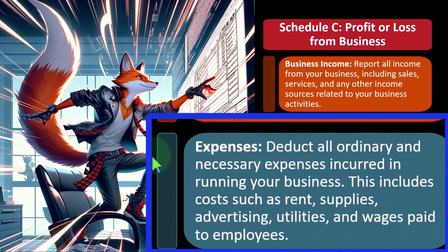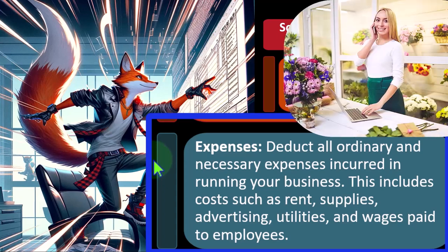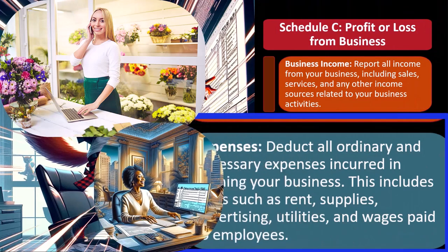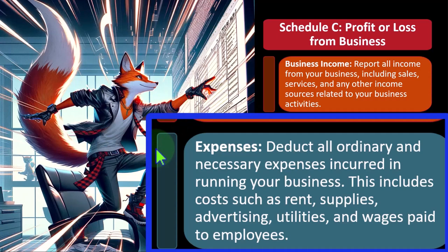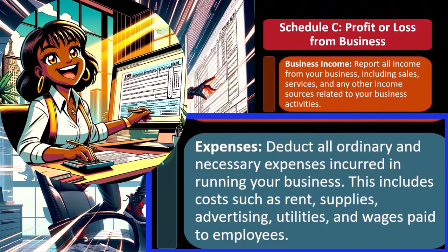Deduct all ordinary and necessary expenses incurred in running your business, including rent, supplies, advertising, utilities, and wages paid to employees. It's very important that someone with a Schedule C business file their tax return — especially if they receive 1099s — and that they report their expenses. If you don't file, the IRS sees the income side but not the expense side. This is often where people get into serious trouble with the IRS over years, because they've always been W-2 employees and were never taught to understand the consequences.